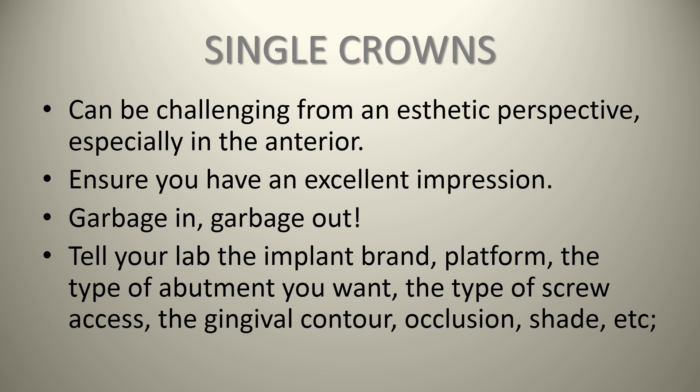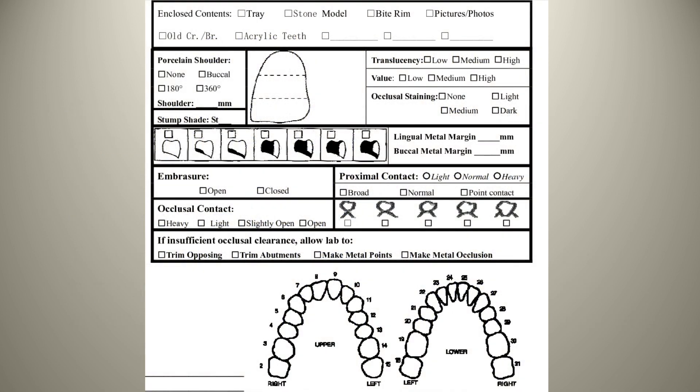You also need to specify whether it's going to be a screw-retained or cemented crown, the gingival contour, the occlusion, the shade, etc. One of the best things you can do to help your lab is have a very detailed lab prescription. As you can see from this example, there's a lot of detail involved: the shade, the type of porcelain, staining, translucency, embrasures, and for porcelain-fused-to-metal, how much porcelain and metal you want and where, as well as the interproximal contacts.